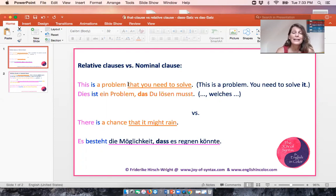So this is a problem that you need to solve. No comma, and that is a relative pronoun. Now the interesting thing is that here the relative pronoun is the object of the relative clause. You need to solve the problem would be this clause as a main clause. You need to solve that problem. If we want to replace the problem by a pronoun, we say you need to solve it.